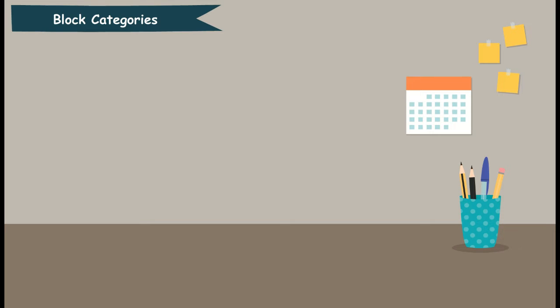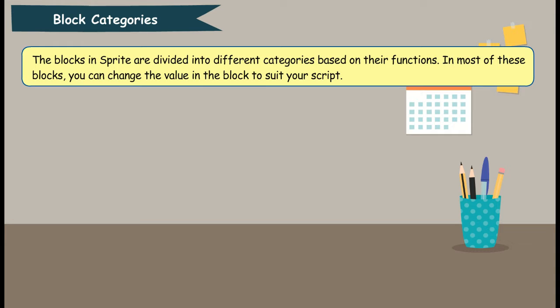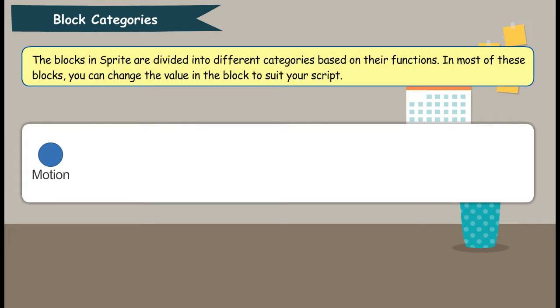Block Categories. The blocks in Sprite are divided into different categories based on their functions. In most of these blocks, you can change the value in the block to suit your script.